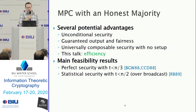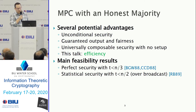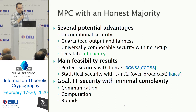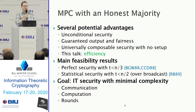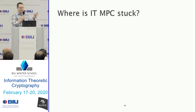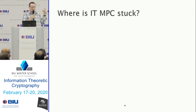Recall the two feasibility results. The first was shown by Gilad, and the second he mentioned at the end of the talk. Our goal is to minimize the complexity of such protocols. People are generally interested in three main efficiency features: communication complexity, computation complexity — how much local computation is performed by each party — and round complexity — how many times the parties need to talk to each other.